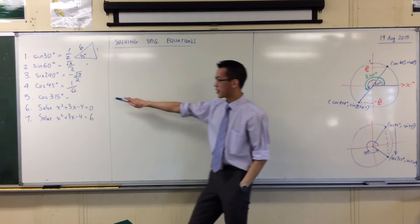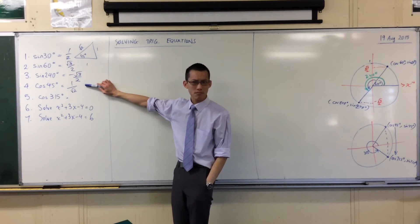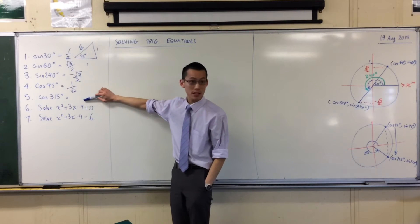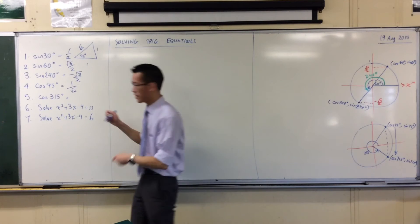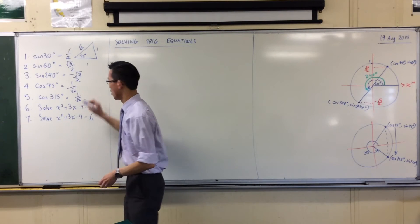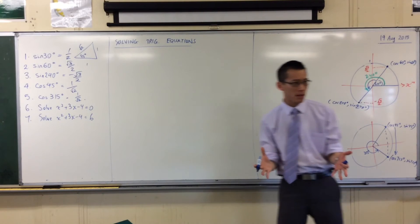And sure enough, if you chuck it into your calculator, you get, what, 0.7-ish for this? And you should get the same number for 315. So 1 over root 2. Are you happy with that? Does that make sense?